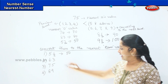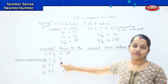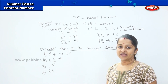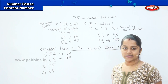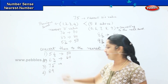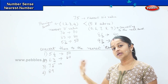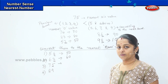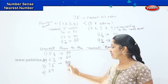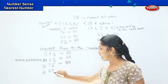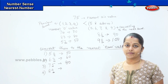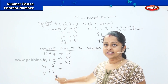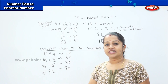The next one is 63. The ones digit is 3 — is it greater than 5 or less than 5? It is less than 5, so we convert it to the previous tens value. Your nearest tens is 60. The next one is 75. It is 5 and above, so we convert it to the next tens level. The nearest tens value is 80. The next one is 89. The ones digit is 9, which is greater than 5, so your nearest tens value will be 90.